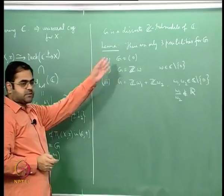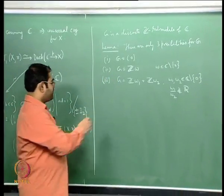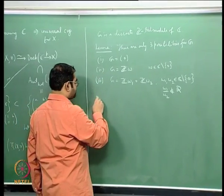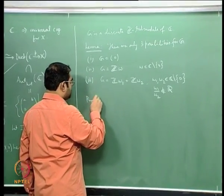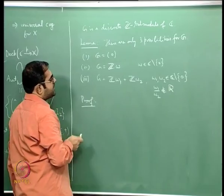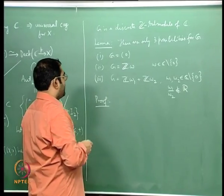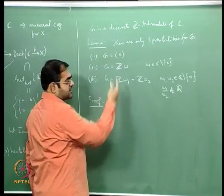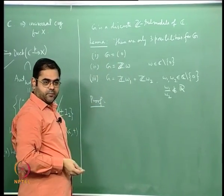We have seen this, and I was telling you about this lemma which says there are only three possibilities for G. Number one: the trivial possibility that G is just the zero group, consisting only of the identity mapping, translation by 0. Second: G is integer multiples of a single non-zero complex number ω. Third: G is an integer linear combination of two complex numbers. Let us try to establish this proof. First, assume G is not 0.